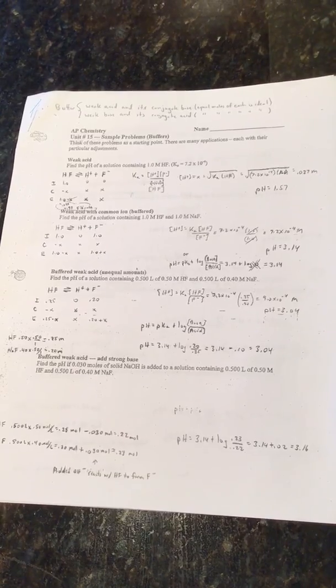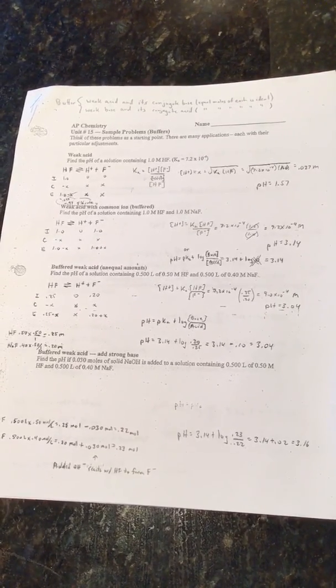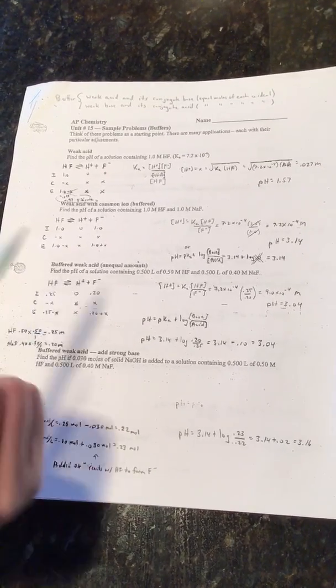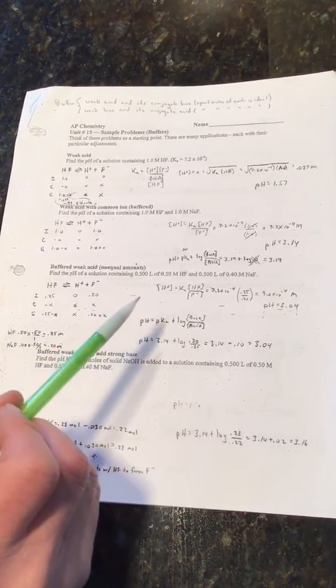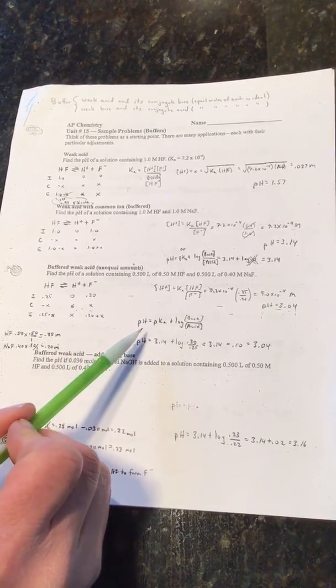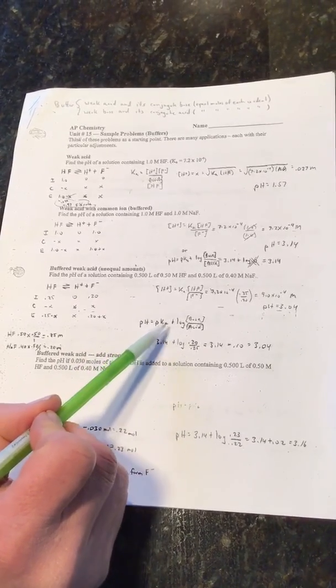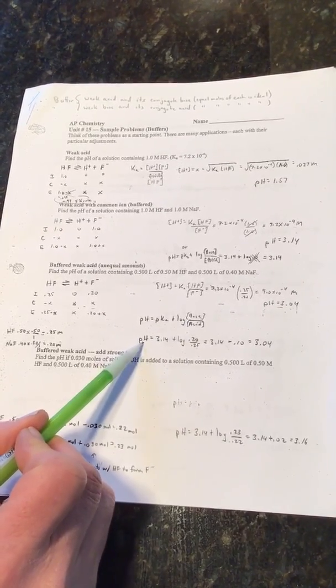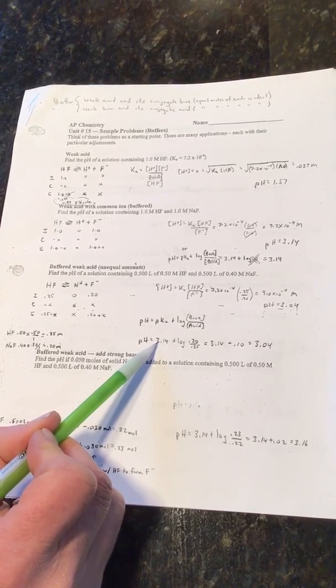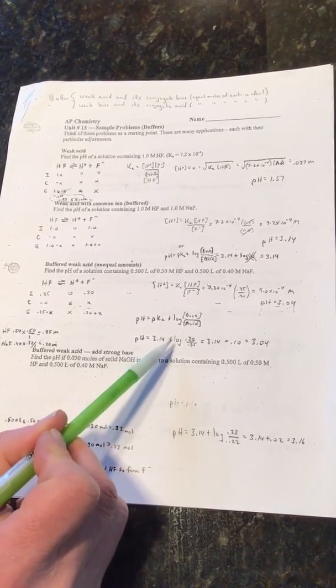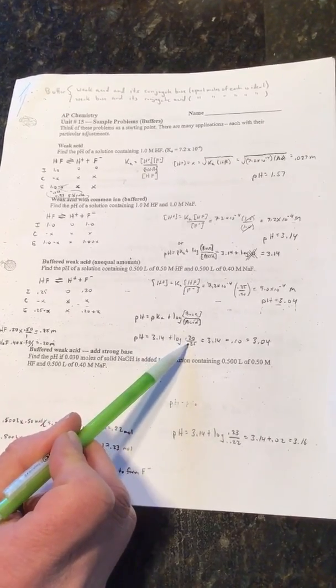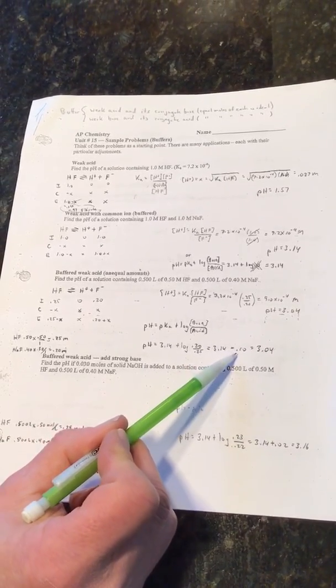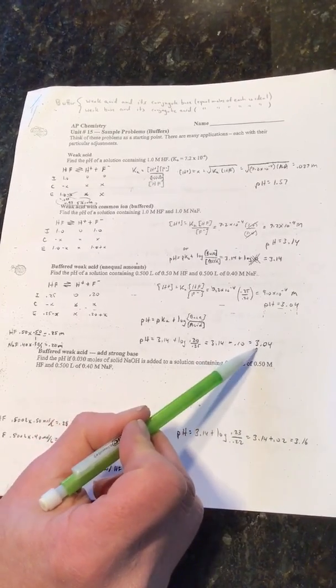There's going to be a shortcut here called the Henderson-Hasselbalch equation, which I'll talk about more closely in the next video. But I can say pH equals pKa plus the log of the base over the acid. I can say the pH equals the pKa, which is 3.14, plus the log of 0.20 over 0.25. And I can get 3.14 minus 0.10 gives me 3.04.